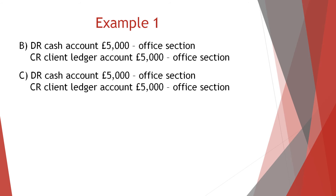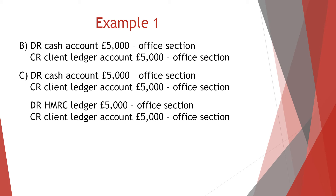Option C: Debit cash account £5,000 office section, credit client ledger account £5,000 office section, debit HM Revenue and Customs ledger £5,000 office section, credit client ledger account £5,000 office section.